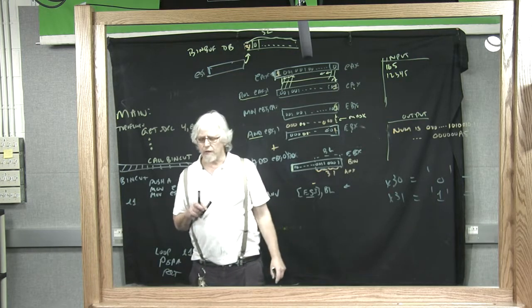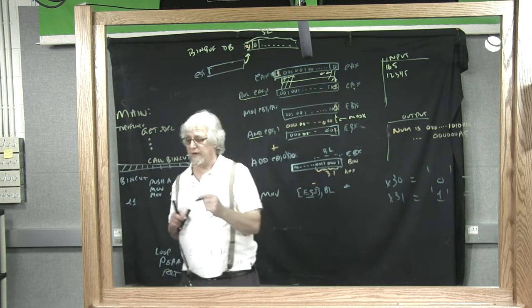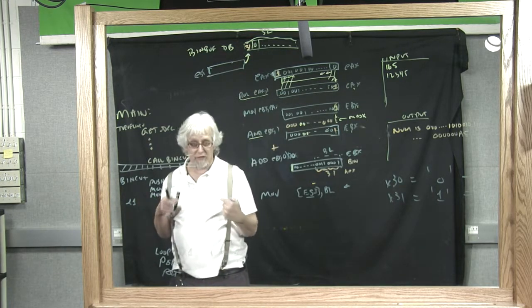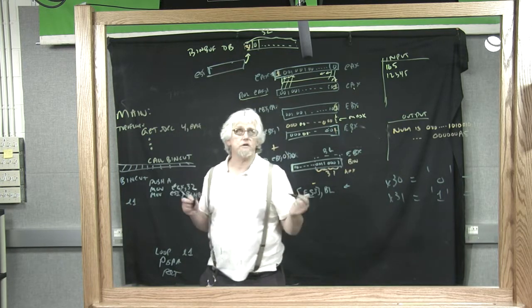Then I go into my loop. ESI is set up, EAX came in already set up, and I can do this stuff here. So let's just do it.